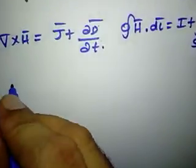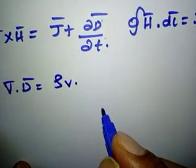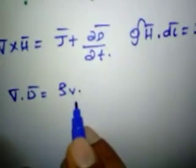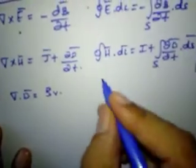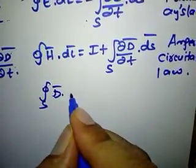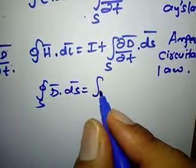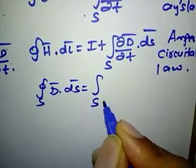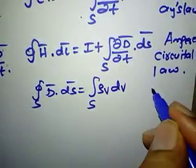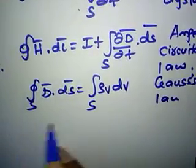The third Maxwell's equation: div D-bar = rho_V, that is divergence of electric flux density equals volume charge density rho_V. In integral form: closed surface integral of D-bar · ds-bar = volume integral of rho_V dv. This equation was derived starting from Gauss's law.